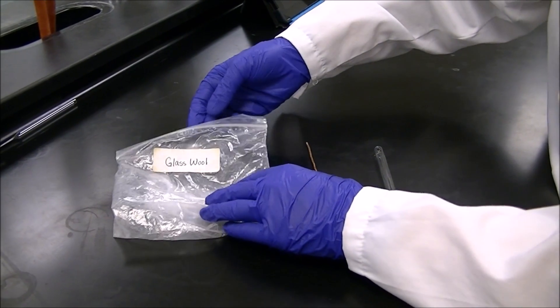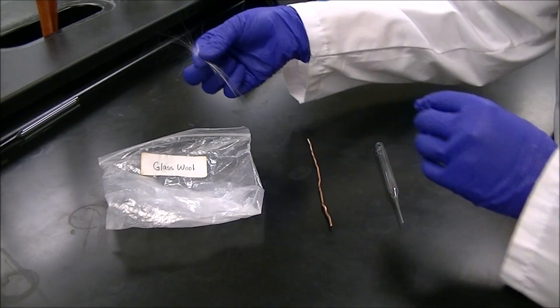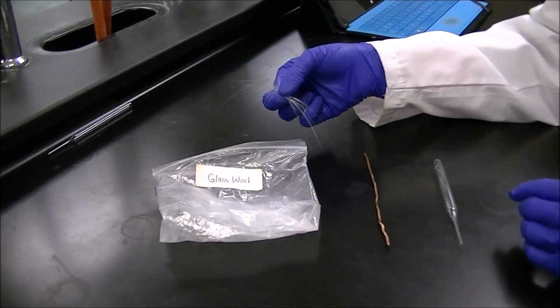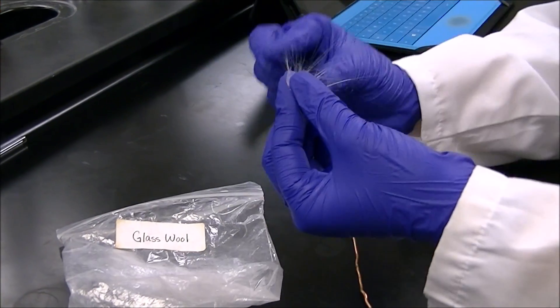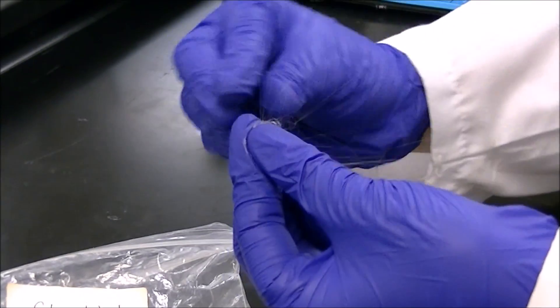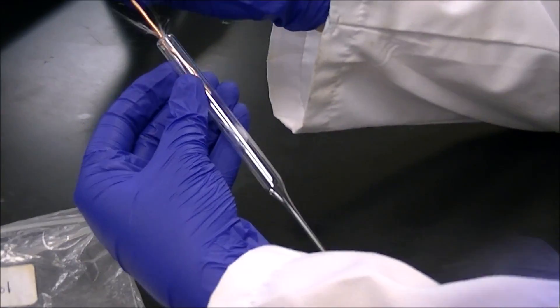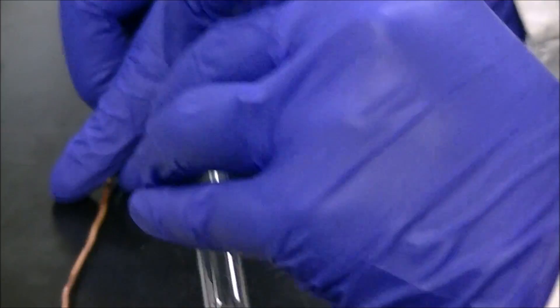We need to create a plug that goes in the bottom of our column. The plug prevents the stationary phase from falling out of the column, and our plug is made out of glass wool. You'll see Ashley will form it into a tight pellet. Then, the plug is placed in the column and stuffed into the nose with the copper rod.